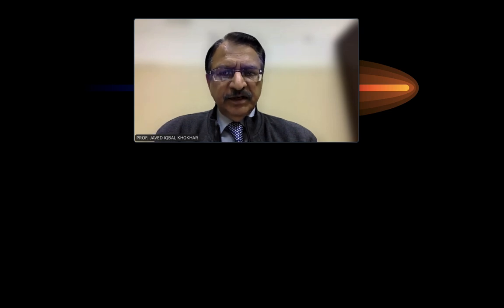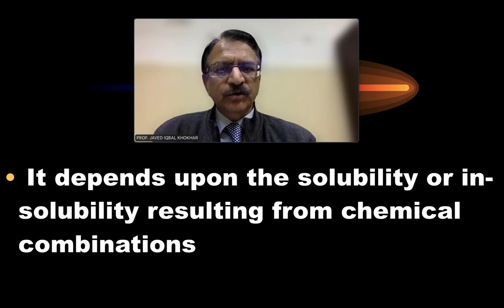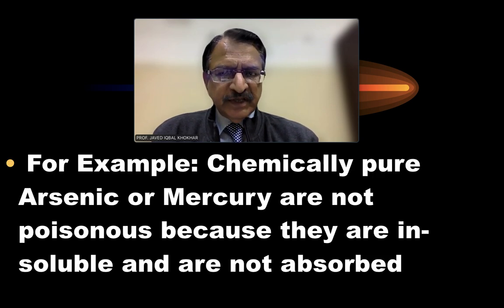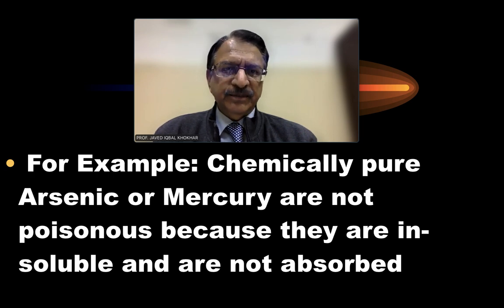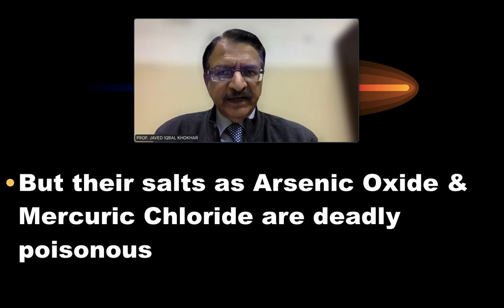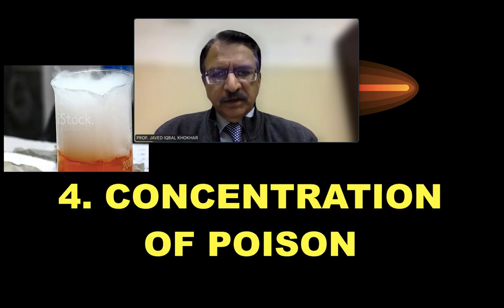Regarding the chemical form of poison, it depends upon the solubility or insolubility resulting from chemical combination. For example, chemically pure arsenic or mercury are not poisonous because they are insoluble and not absorbed. However, their salts — arsenic oxide and mercury chloride — are deadly poisonous. The metallic form is non-poisonous, but their salts are most poisonous.